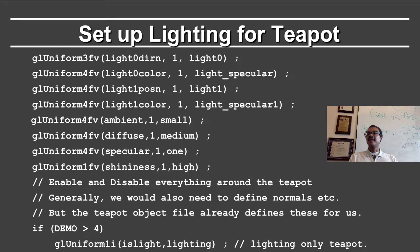This is what we need to do to set up the lighting for the teapot. First, I set up a uniform vec3 for light 0 direction and set it to the value light zero. The 1 here means I'm specifying only one vector. I then set up the light color as a vec4 for RGBA and set it to light specular. Light 1 position is set to light one, light 1 color is set to light specular 1, which is a vec4. Then I set the material parameters: ambient, diffuse, specular, and shininess to the constants defined in the OpenGL program — small, medium, one, and high. So the ambient is a small value, diffuse is medium, specular is set to one, and shininess is set to the high value of 100.